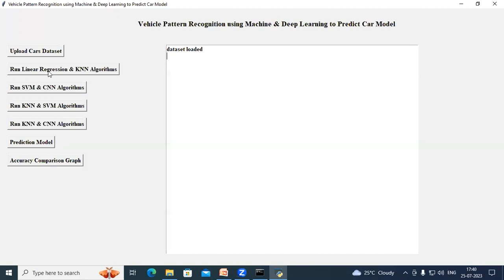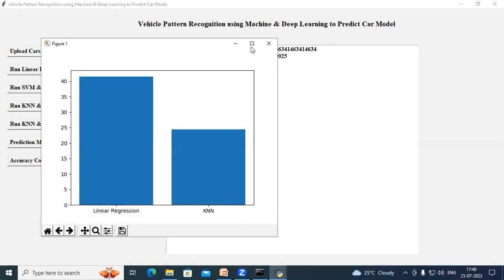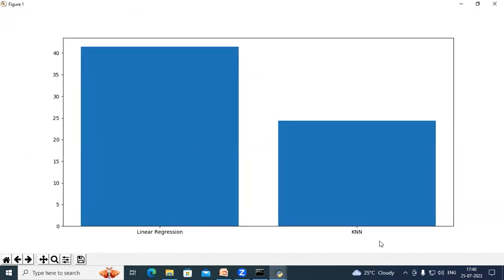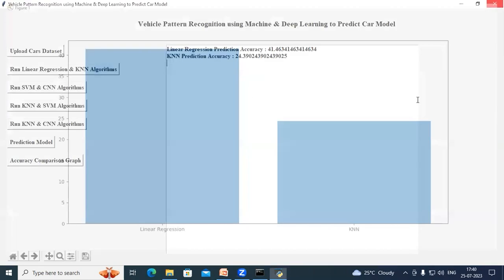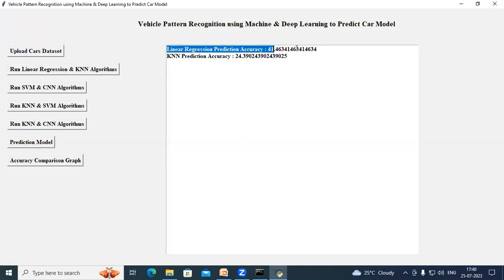Now click on run linear regression and KNN algorithms button. In this graph on x-axis, I have algorithm names and on y-axis, I have accuracy. Close this graph and in the text box, we can see the accuracy of linear regression and KNN model.